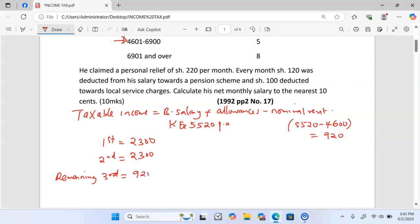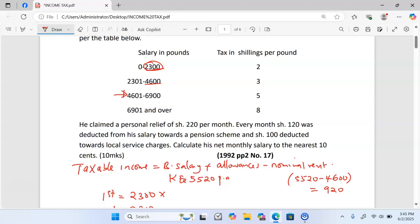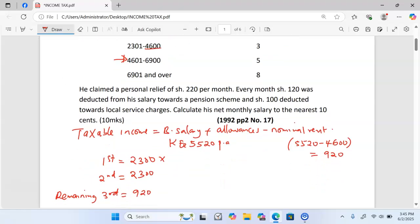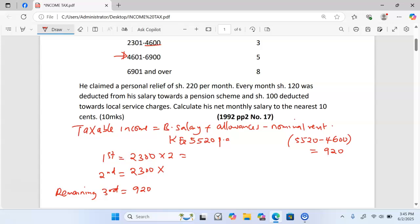920 is the amount to be taxed in the third bracket. Now we can calculate the taxes. The rate in the first bracket is 2 shillings, in the second bracket we have 3, and in the third bracket we have 5.